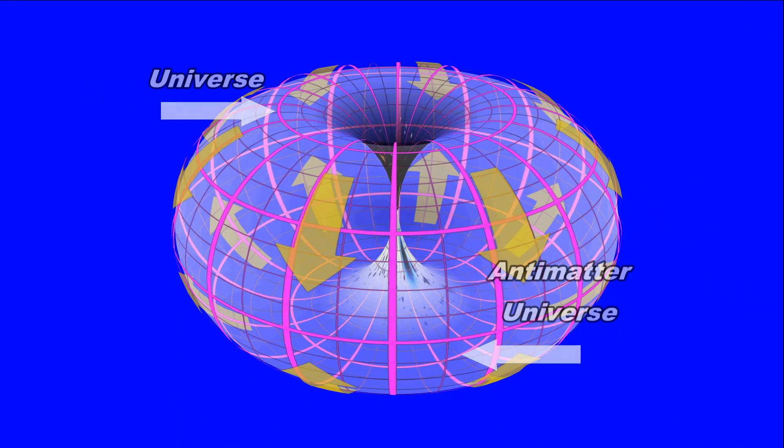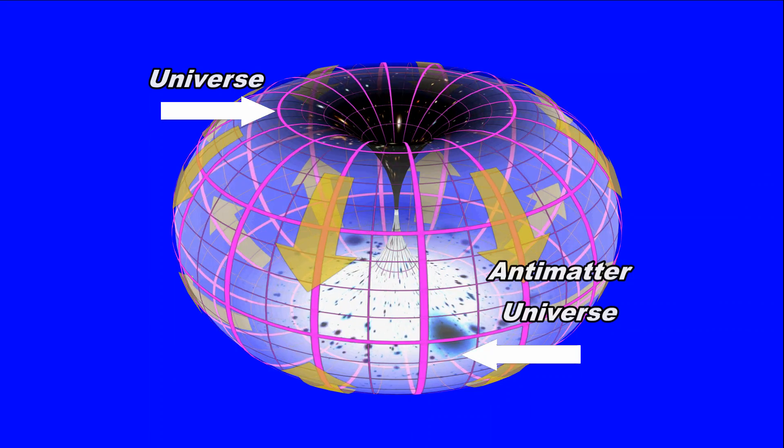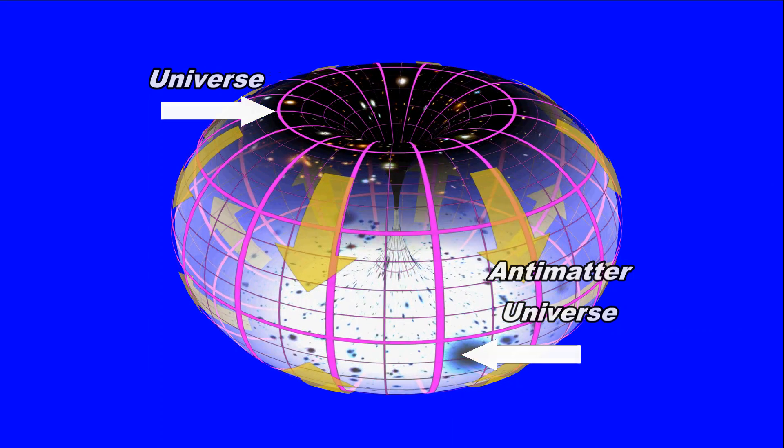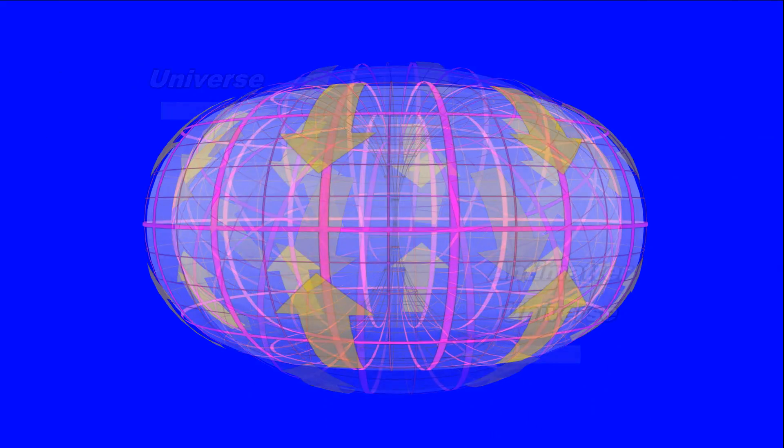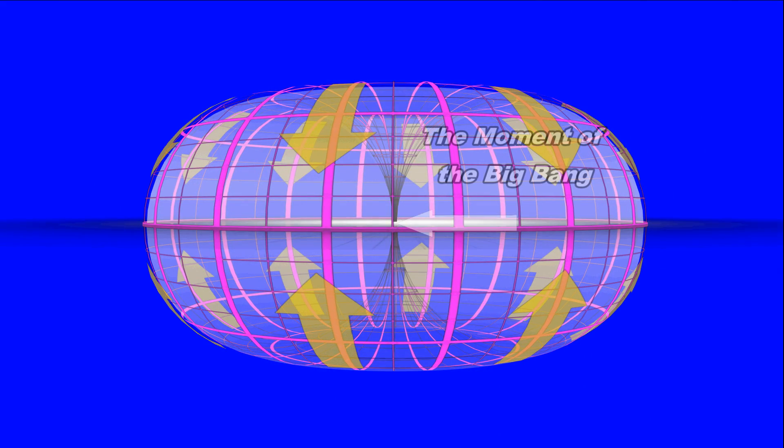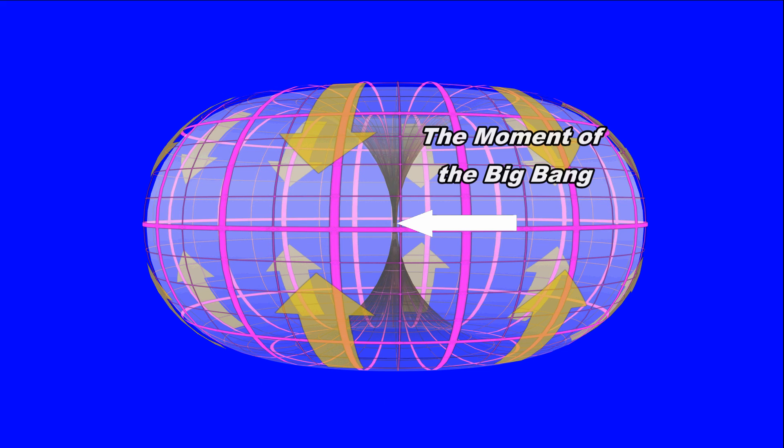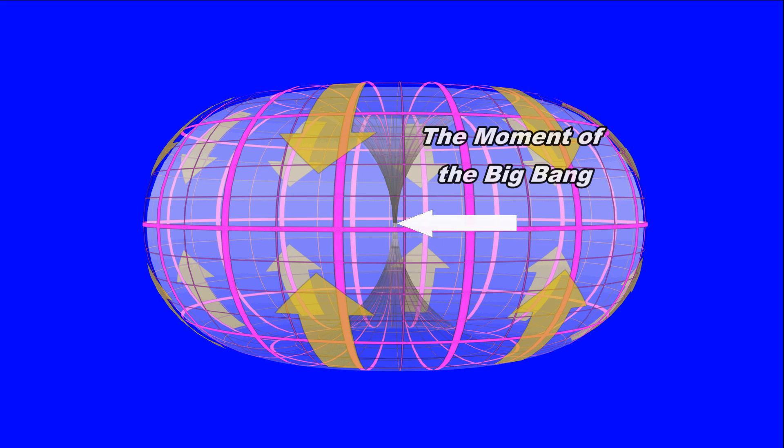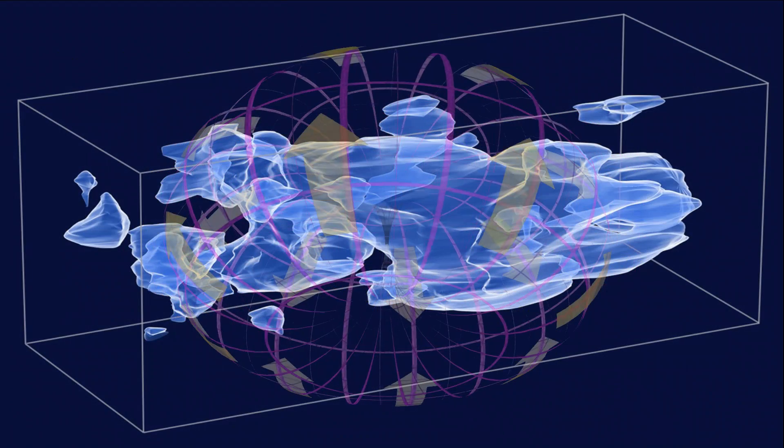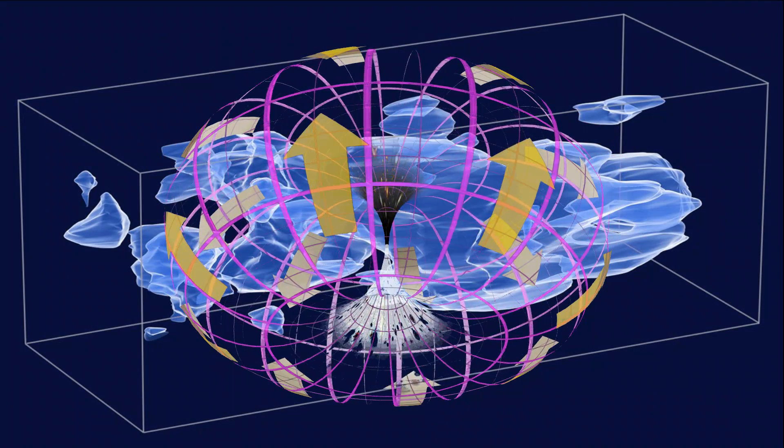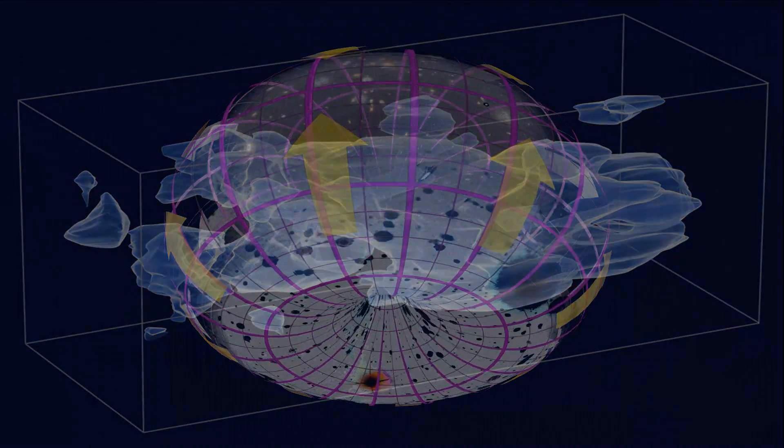Among the many brain teasers in current science are these. Question number one: If matter and antimatter are created simultaneously in equal amounts, why is there so much matter in this universe and so little antimatter? And question number two: What the heck is dark energy?